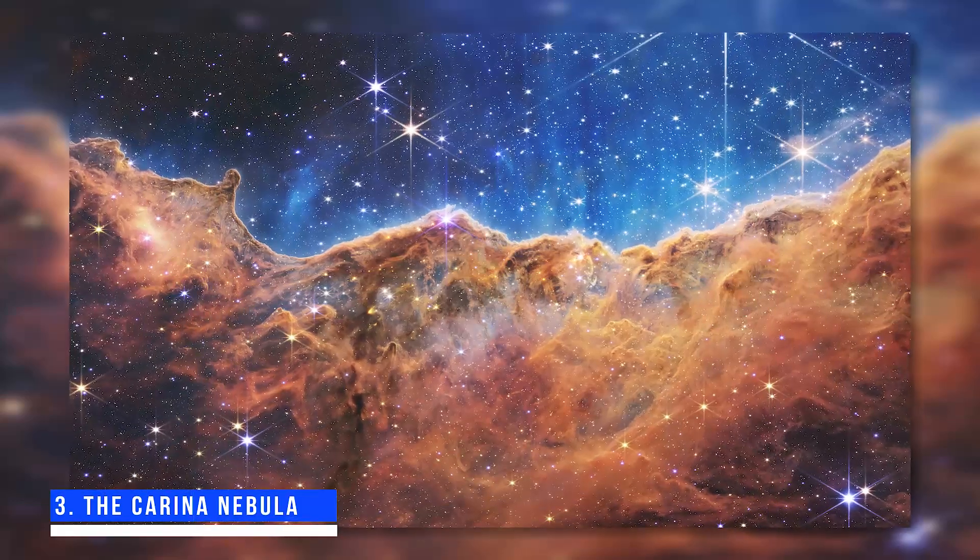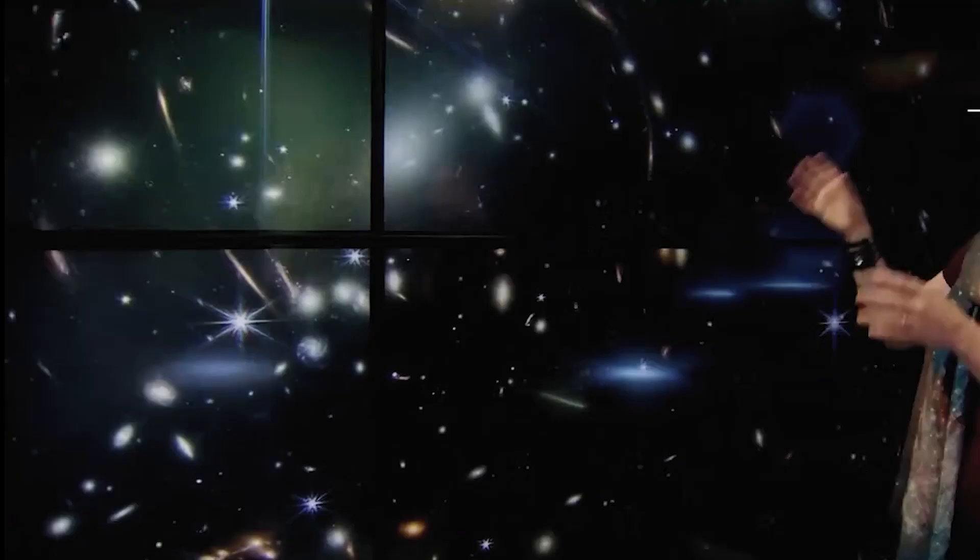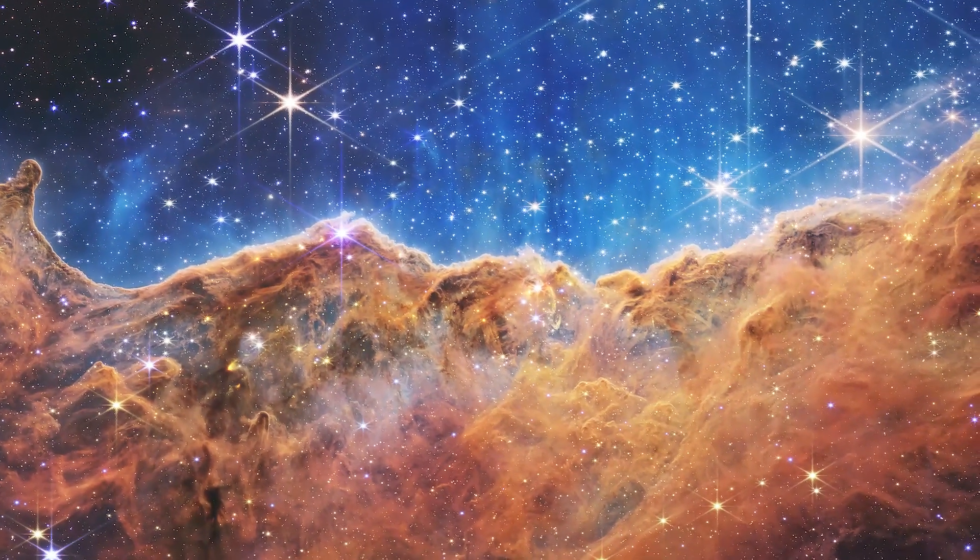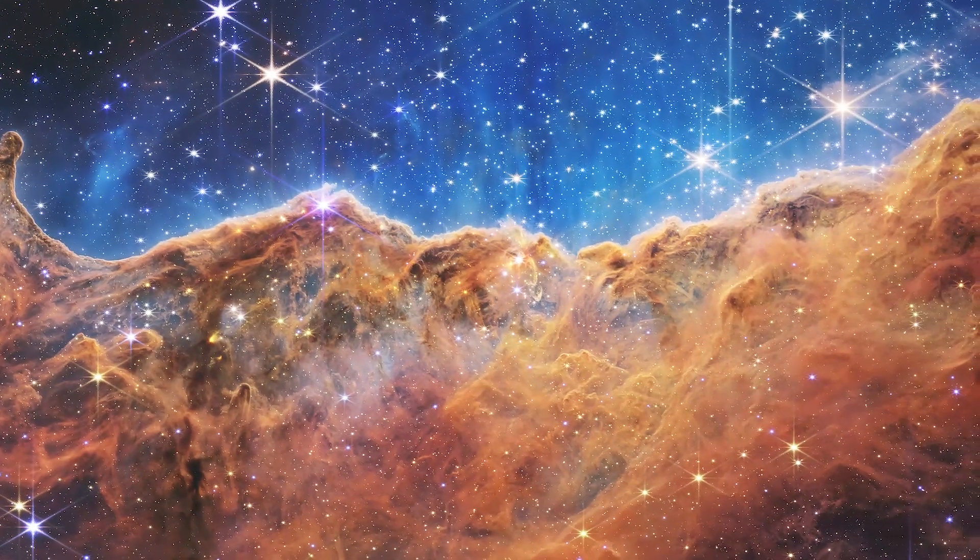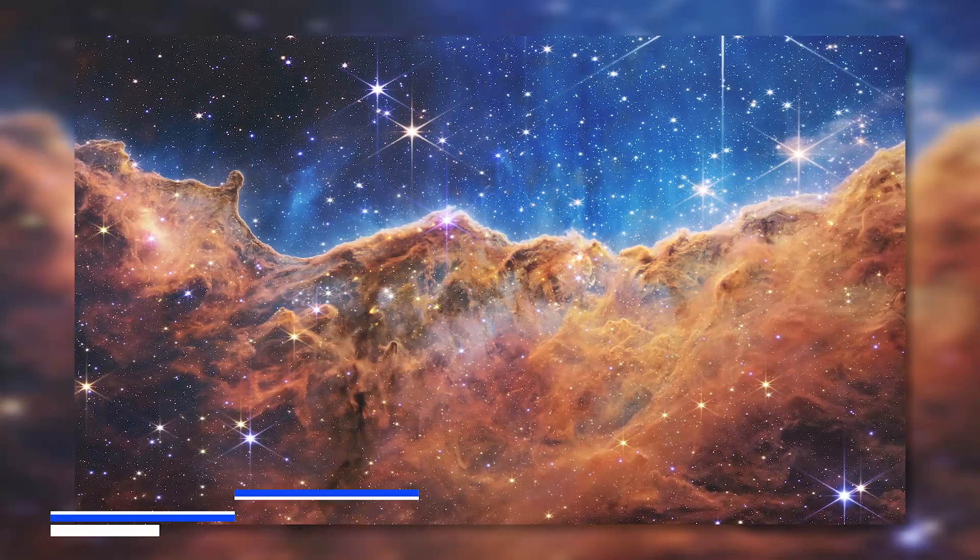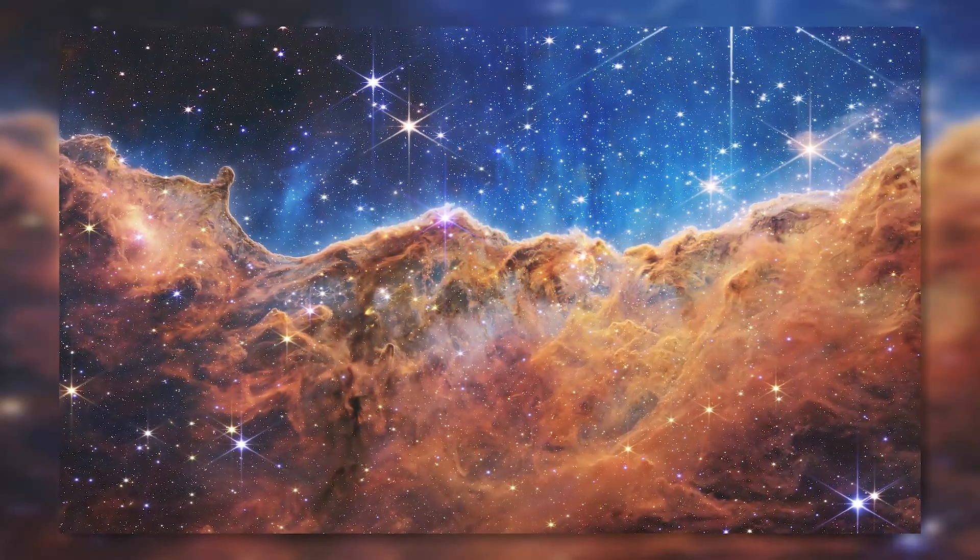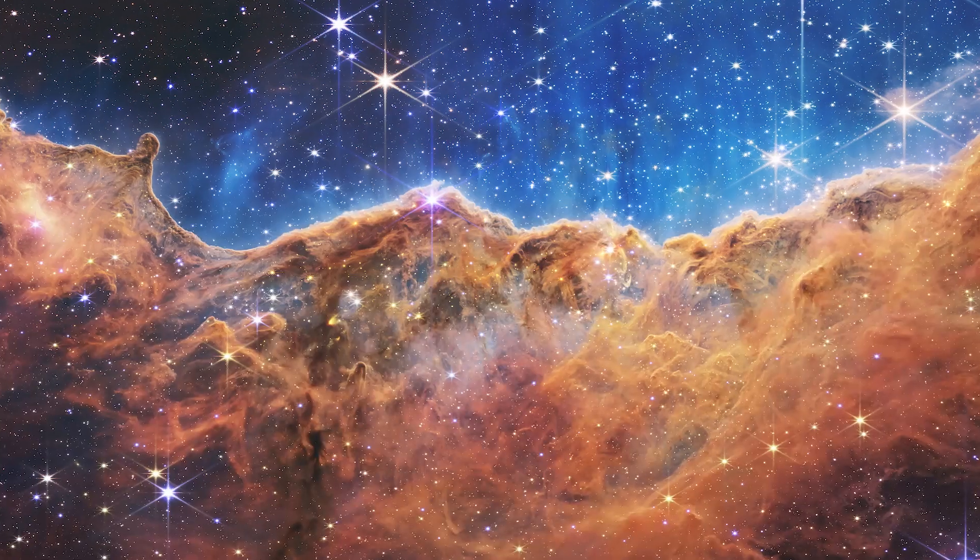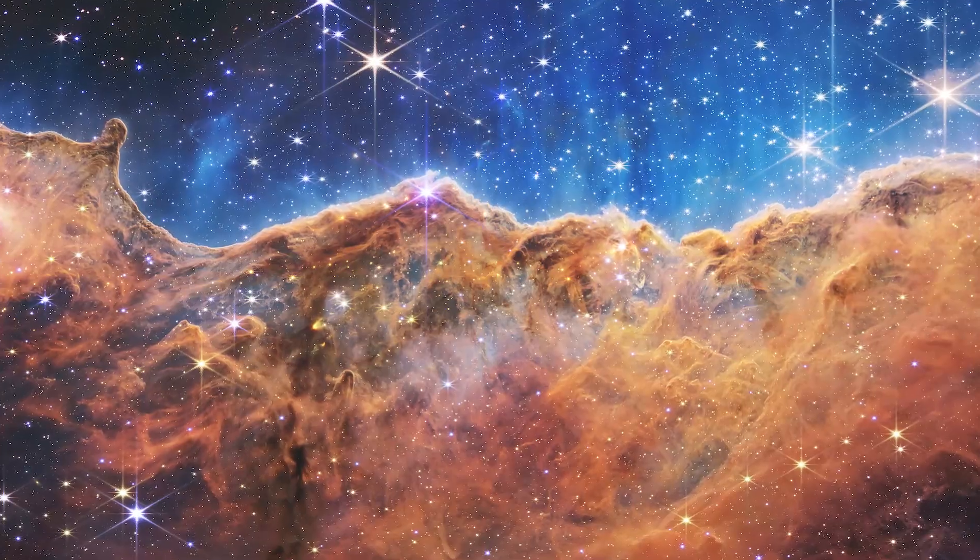Number 3: the Carina Nebula. NASA hosted a separate news conference the day after the SMACS-0723 image was unveiled, presenting several other spectacular photographs of the universe. The image of the Carina Nebula, which perfectly demonstrates the JWST's ability to peek past dust clouds and uncover star nurseries beneath, was possibly the most amazing of them all. The Carina Nebula is one of the largest and brightest nebulae in the sky, located around 7,600 light-years away in the constellation Carina. Because of the JWST's cutting-edge technology, nebulae in stellar nurseries can be seen in more detail than ever before.